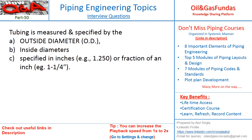Next question: tubing is measured and specified by outside diameter or inside diameter, specified in inches or fraction of an inch — which statement is true? The correct answer is A and C. Tubes are represented by outside diameter only — statement B is not correct. We always represent tubing by its OD only, but we can specify it in inches or fractions of inches.